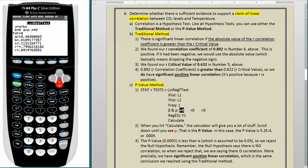0.892, the R correlation coefficient, is greater than 0.632, the R critical value, so we do have significant positive linear correlation. And again, it's positive because R is positive.